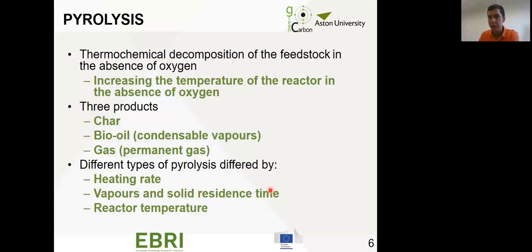There are three different types of pyrolysis: fast, intermediate, and slow, depending on the heating rate, the vapor and solid residence time, and reactor temperature. Fast pyrolysis is associated with very high heating rates, short vapor residence time, and very high temperature, whereas slow pyrolysis is related to low heating rates, longer vapor and solid residence times in the reactor, and lower reaction temperatures.